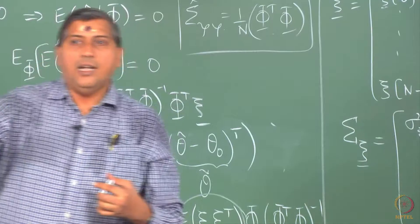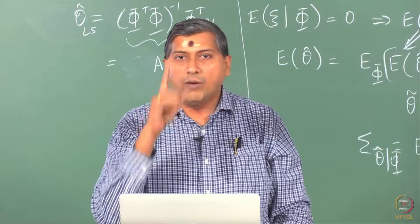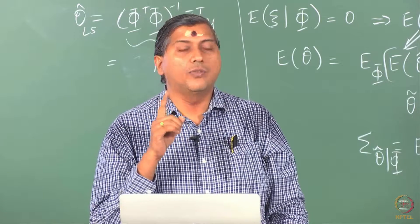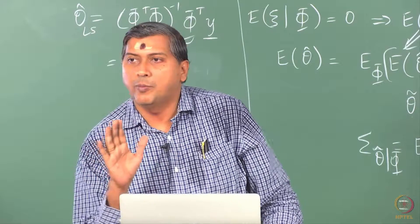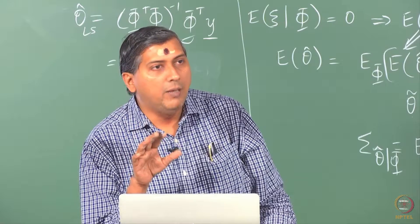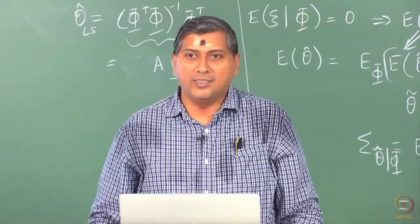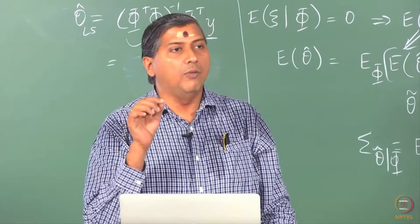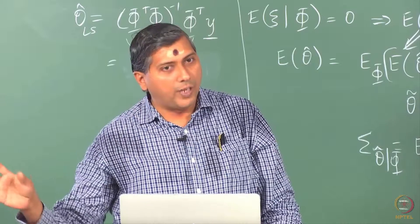The weighted least squares differs from the ordinary least squares in only one aspect. Remember, ordinary least squares can be viewed as minimizing the sum of squared errors by giving equal importance to all observations, whereas in the weighted least squares we give different weights to different observations.